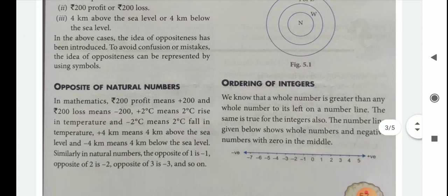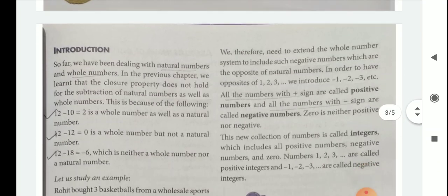Plus 4 kilometer means 4 kilometer above the sea level, and minus 4 kilometer means 4 kilometer below the sea level. Like this, we know the opposite values in mathematics. Therefore, we need to extend the whole number system to include such negative numbers, which are the opposite of natural numbers.